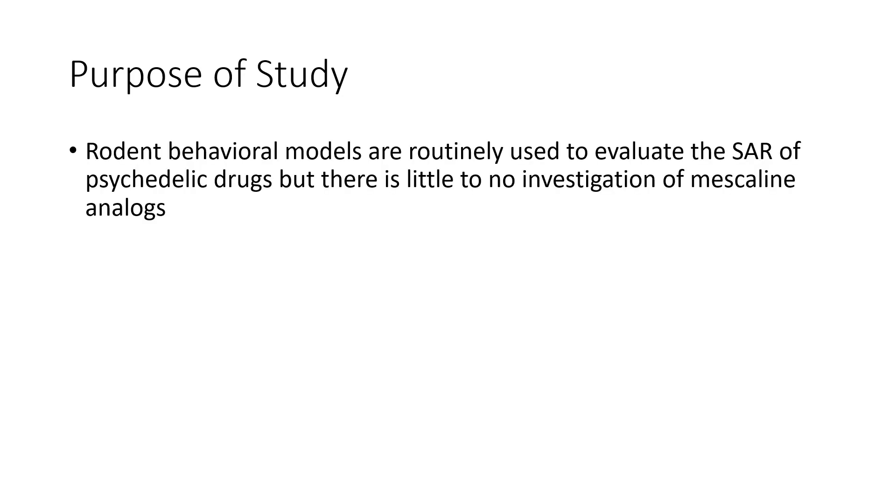The purpose of this publication was to evaluate all nine mescaline analogs in rodents to see which ones would produce the strongest effects, which would either approve or disprove what Alexander Shulgin proposed in P-Cal. Rodent behavioral models are routinely used to evaluate the structure-activity relationship of psychedelic drugs, but there is little to no investigation of mescaline analogs.